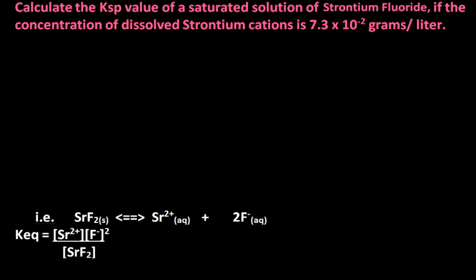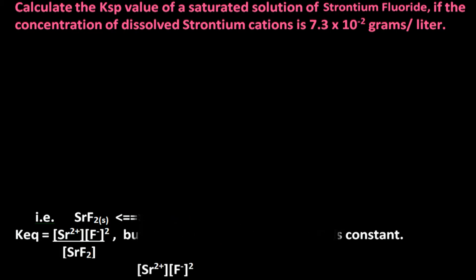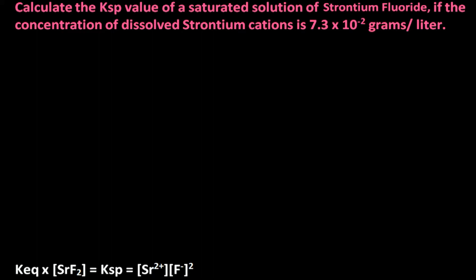Therefore, from the ionization equation, the K_eq expression would be the concentration of strontium 2+ cation times the square of the fluoride anion, divided by the concentration of strontium fluoride. Since strontium fluoride is a solid, it represents a constant. To clear the constant from the equilibrium expression, we simply multiply through by the concentration of strontium fluoride. This yields K_eq times the concentration of solid strontium fluoride, which equals KSP, which equals the concentration of strontium 2+ cation times the square of the fluoride anion.